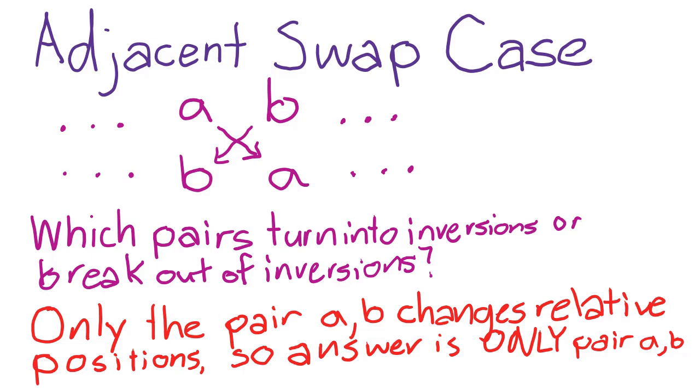So the only change in the total number of inversions is from the pair a and b. And we are guaranteed to have a change here. If a and b were not in inversion, they are now, and if they were in inversion beforehand, they aren't anymore. So, the pair of a and b toggle their inversion status from this swap. So thus, as this is the only case where an inversion is created or destroyed, the number of inversions either goes up by one or down by one, which is an odd amount.